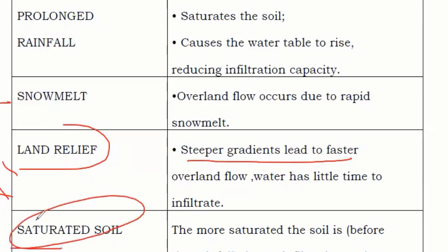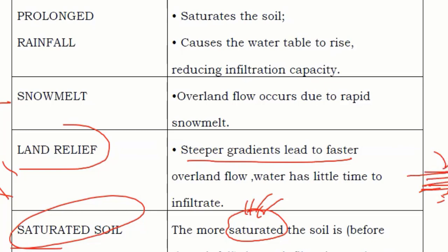Next is saturated soil. Like in chemistry when a solution cannot dissolve any more solute, saturated soil has already absorbed as much water as it can and cannot take more. When additional water arrives, it cannot go underground because the ground is already saturated. The water remains at the surface and flows overland, which can cause flooding.